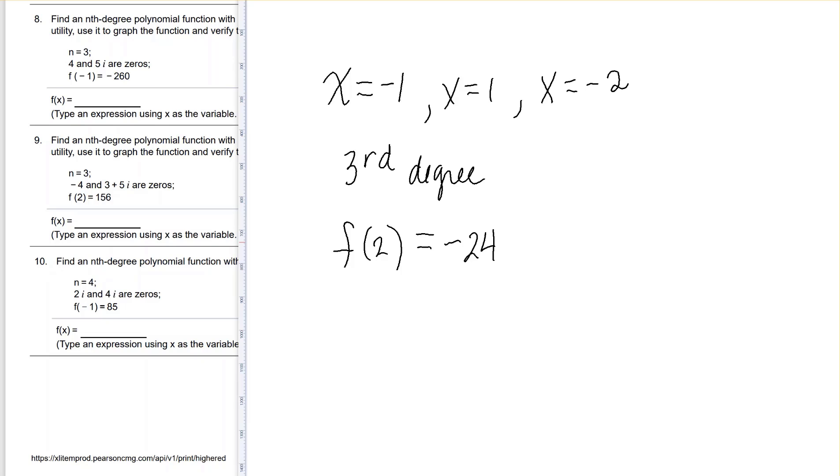We'll first start by constructing the factors that would come from these three zeros. So if x is negative 1, that would come from x plus 1. If x equals 1, that would come from x minus 1. And if x equals negative 2, that would come from x plus 2.